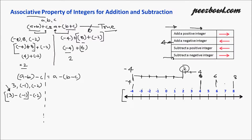We are subtracting a negative integer, so we move right on the number line. Finding three on the number line, we move one unit right and reach four. So 3 − (−1) = 4. Now we compute 4 − (−2): again subtracting a negative integer, we move two units right from four — one and two — and reach six. So four minus minus two is six.